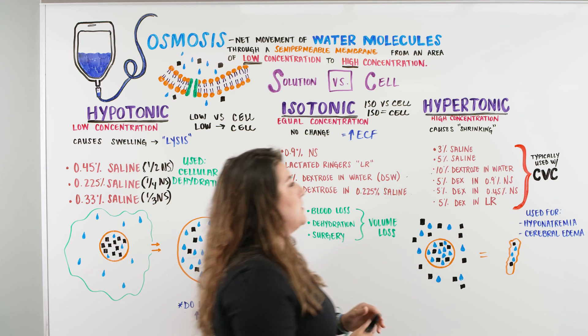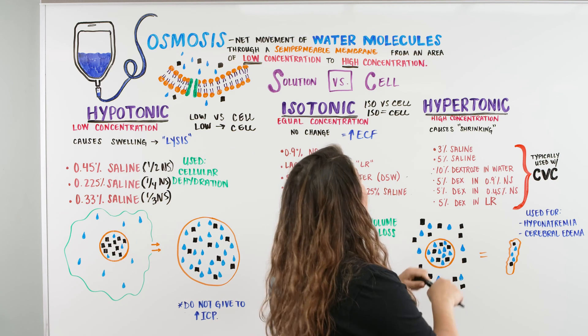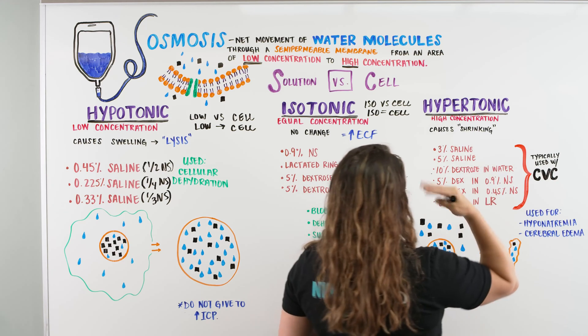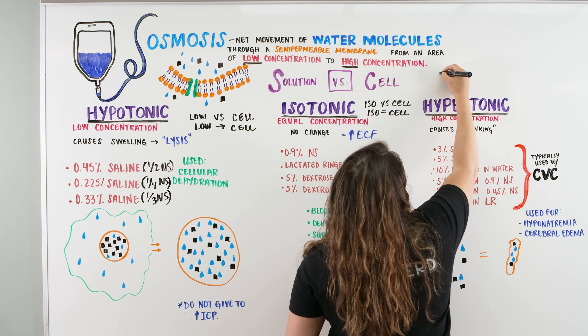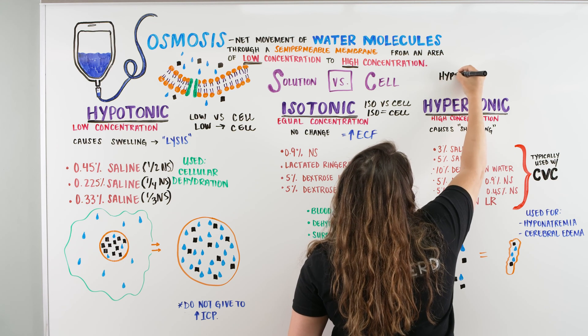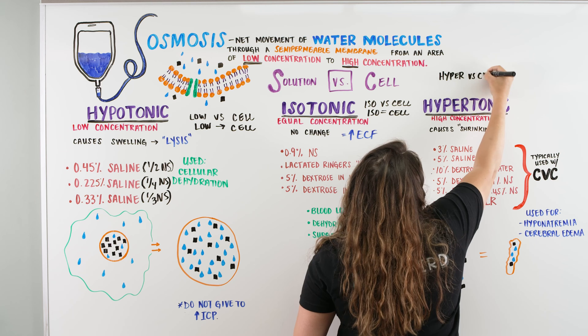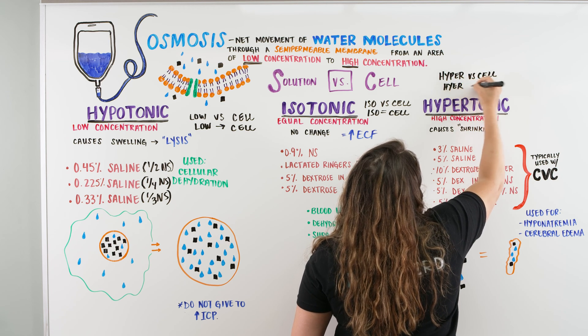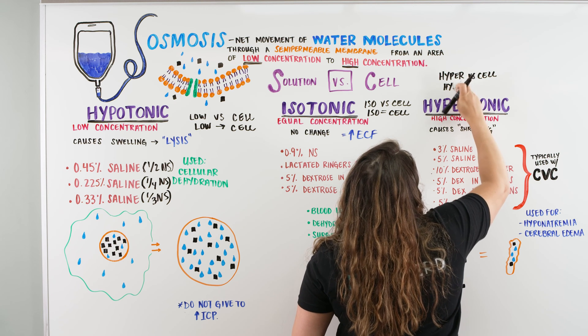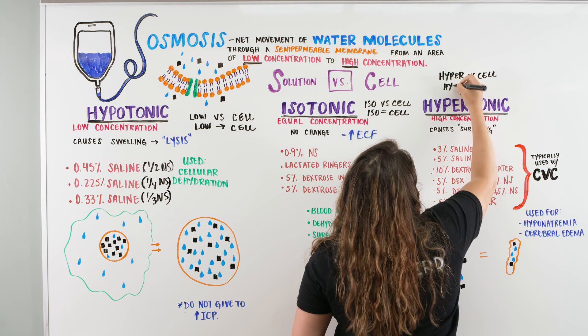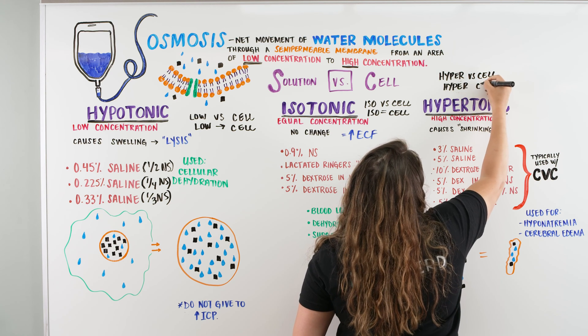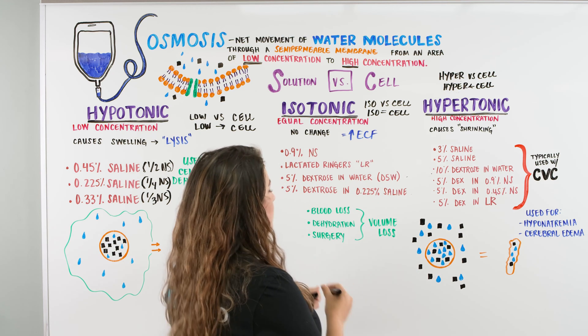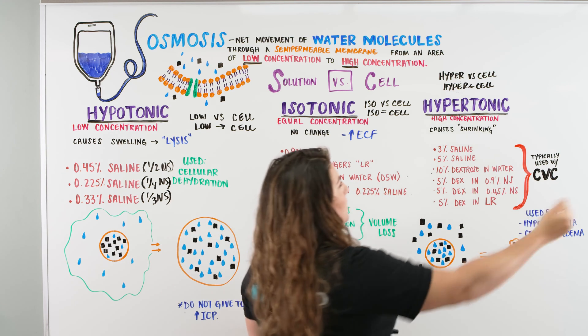Last thing we're going to talk about here is hypertonic. Now remember with hypertonic, again, we're going to go back. Solution versus cell. Keep getting that in your head. I think this works the best. So we know that hyper means like excess or a lot. So we got hyper versus cell. So what does that mean? Hyper, so we got hyper versus cell. So what's happening here? Hyper, low to high, right? So hyper is bigger than the cell. So we're going to go out of the cell into this fluid. So remember, hypertonic is a high concentration and our water that's in the cell is obsessed with all that salt that's outside the cell. So it's going to move out. So as it moves out, our cell starts to shrink.